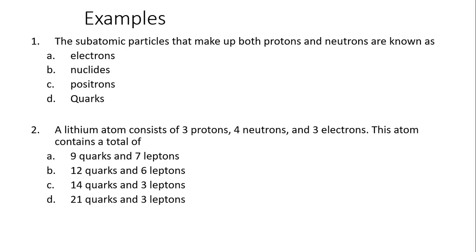There are two examples. The subatomic particles that made up both protons and neutrons are known as quarks. Again, protons are up, up, down, and neutrons are up, down, down. A lithium atom consists of three protons, four neutrons, and three electrons. This atom has how many total quarks and how many leptons? We know it has three electrons, so it must have three leptons. For each proton, you'll have three quarks. So you have nine quarks for protons. For each neutron you also have three quarks. So you have 12 quarks in neutrons. 9 plus 12 give you 21 quarks. So the answer is D. That's it. Thank you very much.